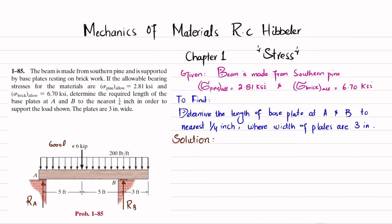Six kips equals 6,000 pounds. The uniformly distributed load is 200 lb/ft. When you convert this UDL into a point load, it acts at the midpoint of the beam. The total length is 13 feet, so 200 × 13 = 2,600 pounds, acting at 6.5 feet from either side.